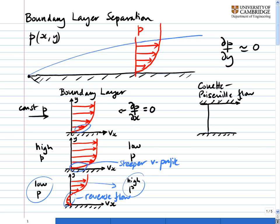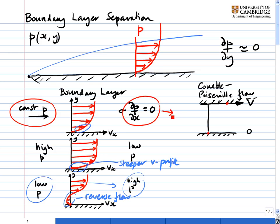Earlier we looked at Couette flow and Poiseuille flow — the flow between two flat plates with the top plate moving and the bottom plate stationary, with or without a pressure gradient. Let's look at the case of pure Couette flow. Here we have a top plate moving at velocity v and a bottom plate that's stationary. By the no-slip condition, velocity at the bottom is zero and velocity at the top plate is v. In pure Couette flow, dp dx is equal to zero, and we get a linear velocity profile between the two plates.